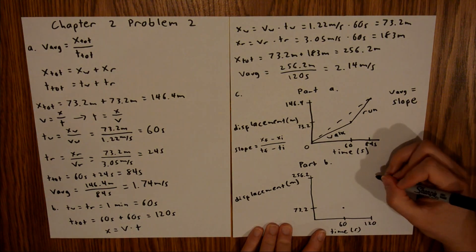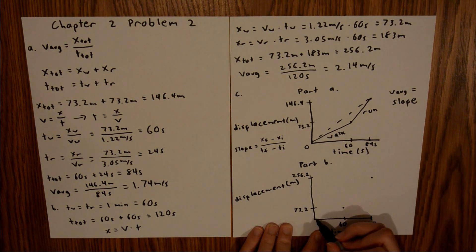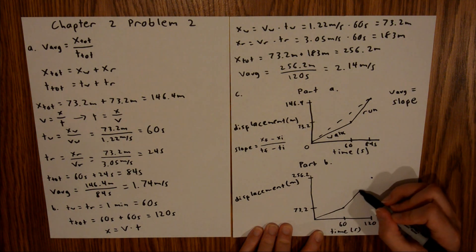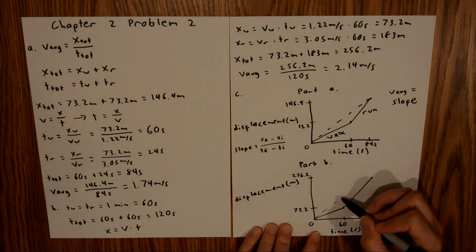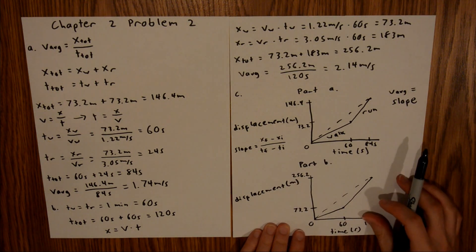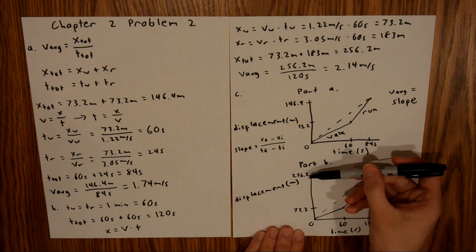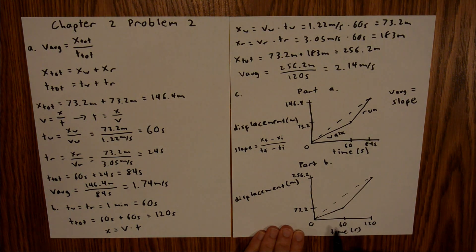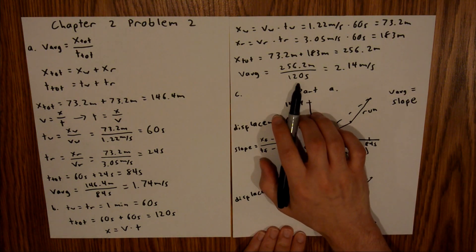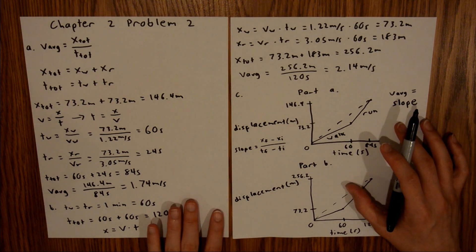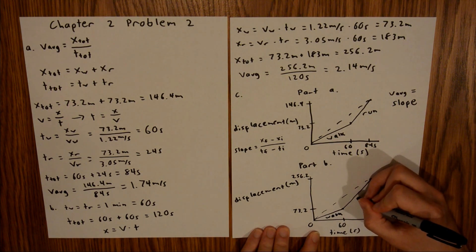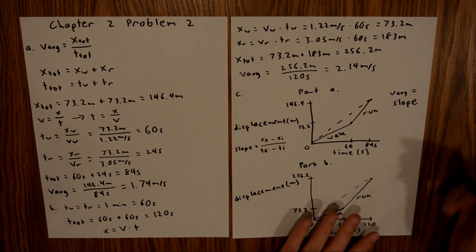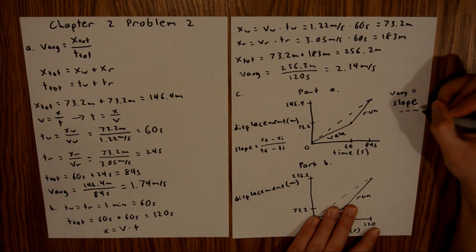We can plot our two points and again draw a straight line from the origin. Then again, we can draw the V-average dotted line. You would have 256.2 minus zero over 120 minus zero, which is 256.2 divided by 120 — exactly the calculation we had for Part B. So again it checks out, and the average velocity is the slope of the dotted line, where this is your walking segment and this is your running segment.